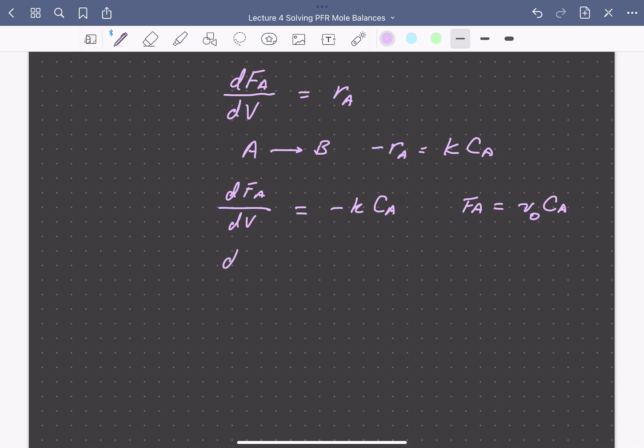In that case, our mole balance can be rewritten as V0, the inlet volumetric flow rate, times the change in concentration with respect to volume of A. That's equal to our rate expression for the rate of formation of A.